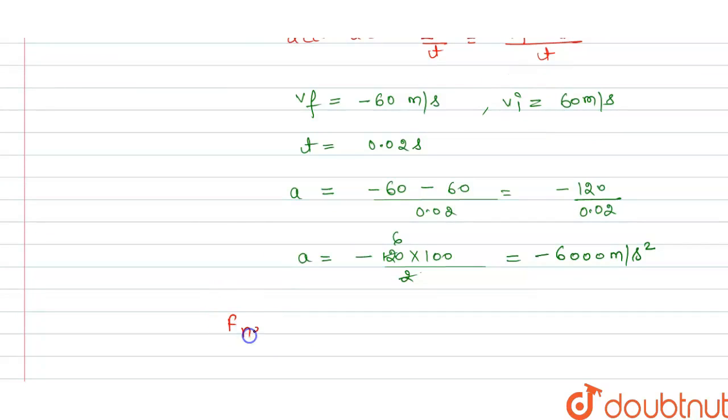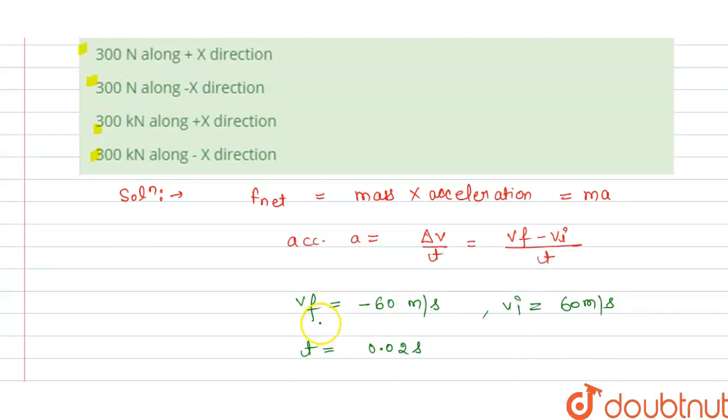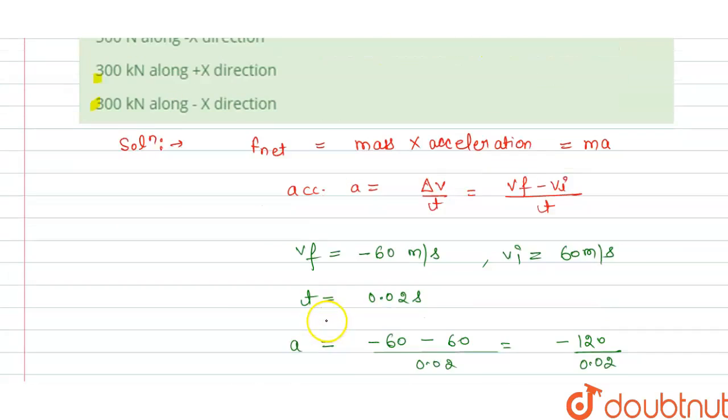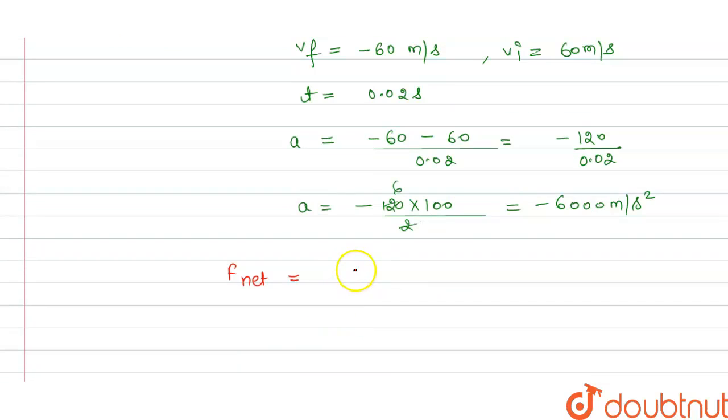From this we can say that force net is equal to mass into acceleration. Mass is given to us 50 gram. We convert it into the 50 gram.